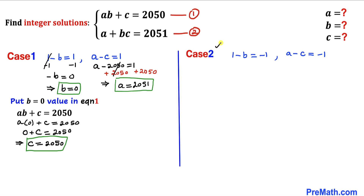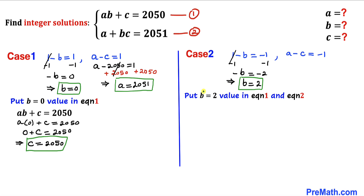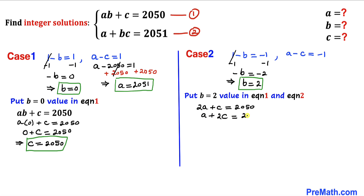For Case 2, solving (1 − b) = −1: subtracting 1 from both sides gives −b = −2, so b = 2. Plugging b = 2 into equation one gives 2a + c = 2050, and into equation two gives a + 2c = 2051.